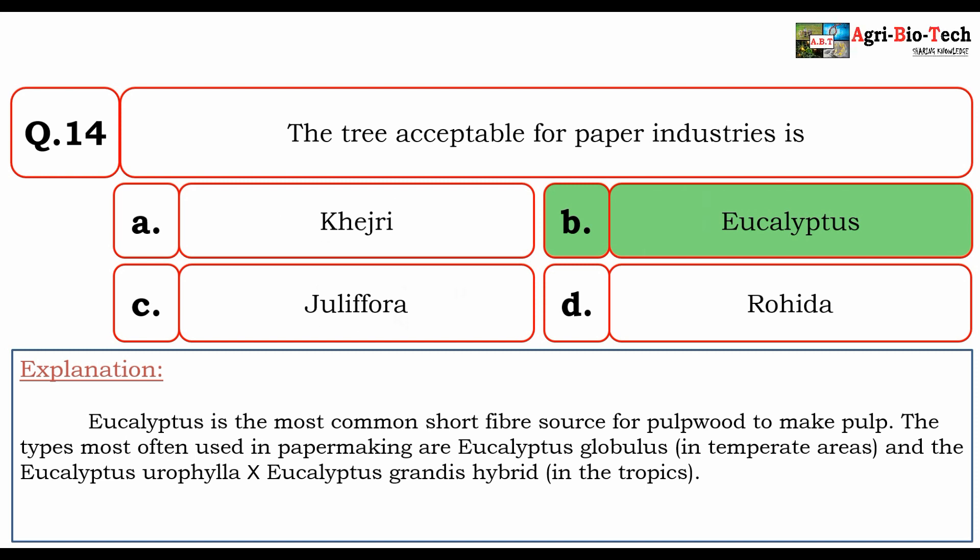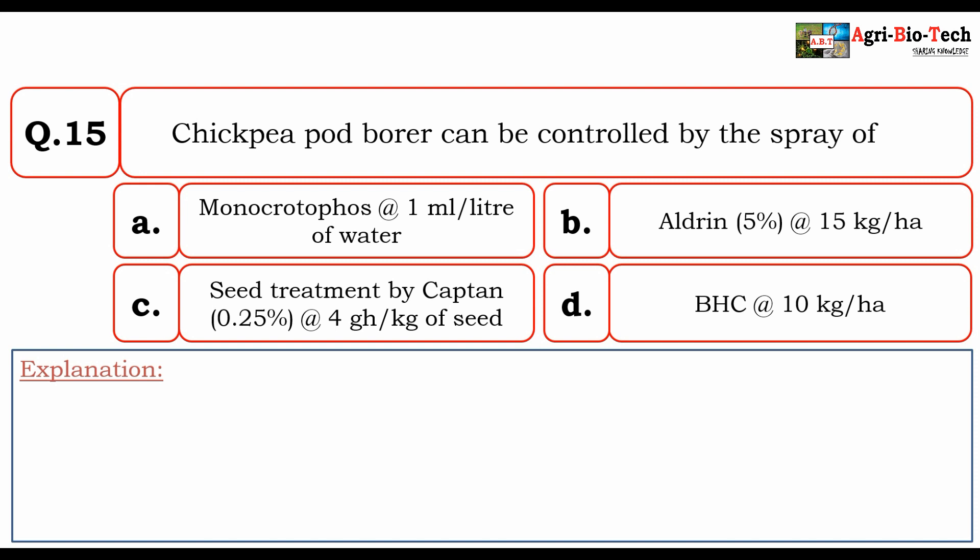The last question: Chickpea pod borer can be controlled by the spray of? The given options are A. Monocrotophos at the rate of 1 ml per litre of water, B. Aldrin 5% at the rate of 15 kg per hectare, C. Seed treatment by Captan 0.25% at the rate of 4 g per kg of seed, and D. BHC at the rate of 10 kg per hectare. The correct option is A.